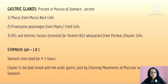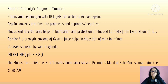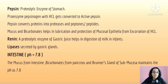The stomach stores food for four to five hours. Chyme is the term used for food mixed with acidic gastric juice by the churning movement of the muscular walls of the stomach. Pepsin is a proteolytic enzyme; the pro-enzyme pepsinogen is converted to active pepsin with the help of HCl. Pepsin converts proteins into proteoses and peptones. Mucus and bicarbonate help protect the mucosal epithelium from excoriation by HCl. Rennin is a proteolytic enzyme that helps in the digestion of milk in infants.